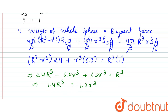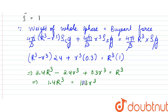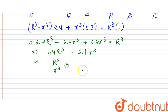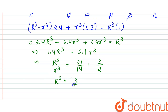From here, R³/r³ = 2.1/1.4 = 21/14 = 3/2. So R³ = (3/2) r³.